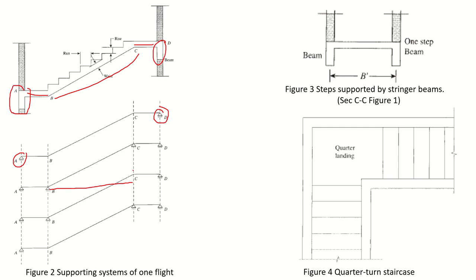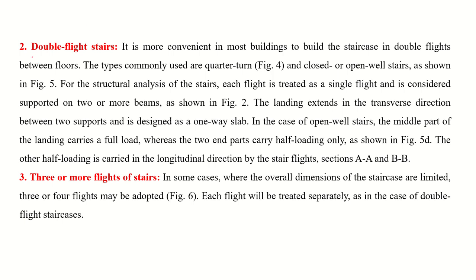There are also possibilities of providing a support at only B or only C, giving span lengths of B to D or A to C respectively. These are the different arrangements of the supporting system. Figure three shows section CC from figure one, where the steps are supported by stringer beams.